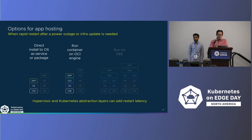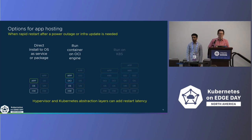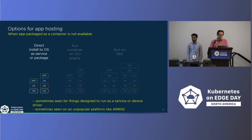If rapid restart after a power outage is important, once again prefer bare metal — either in Docker or not. You don't want to wait to boot up a hypervisor and a Kubernetes cluster. Some services in the house need to be up very quickly because others depend on them. For example, if you put up an authentication source, your Kubernetes cluster might depend on that being available at boot time.